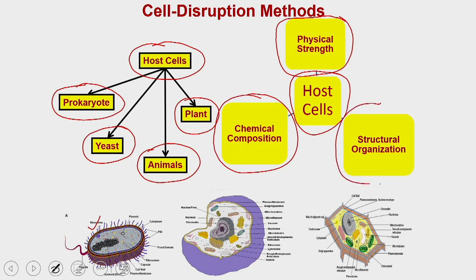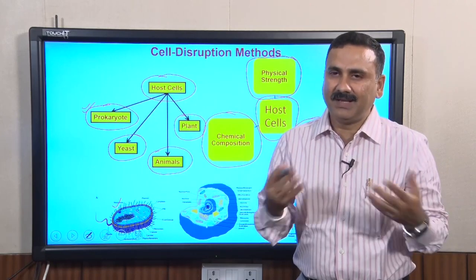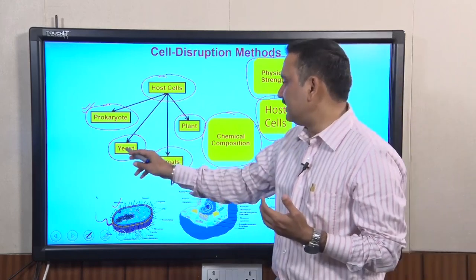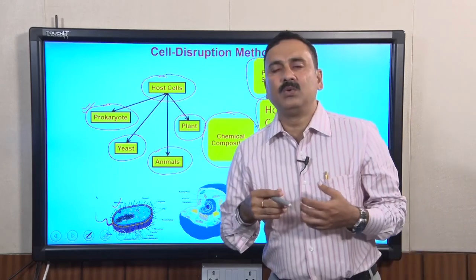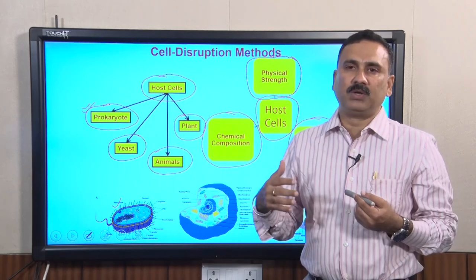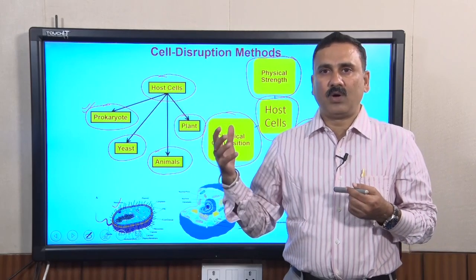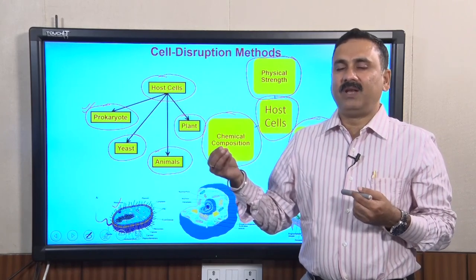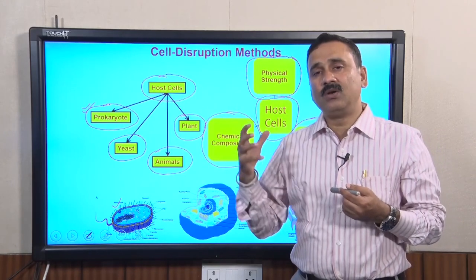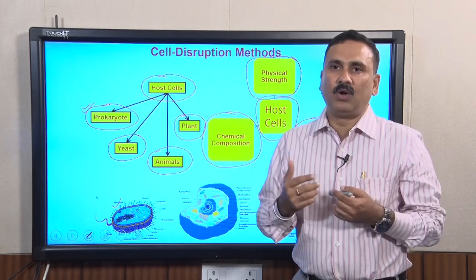Structural organization also differs between strains. In prokaryotes, there are no organelles, so once you break the cell wall the product comes out. Whereas in yeast, animal, or plant cells, organelles are present, so breaking the outer plasma membrane does not ensure the product is released. You may need to disrupt specific organelles. Depending on the host strain, you must devise strategies accordingly.